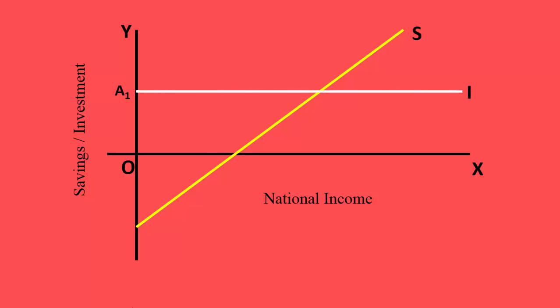I is the investment curve. It is parallel to the x-axis. It is autonomous in nature. It does not depend on income. It simply tells us that the business community has planned to invest a fixed amount, that is OA1 amount, whatever be the income.